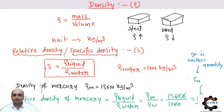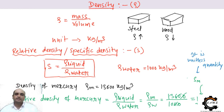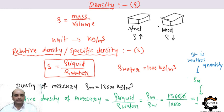The reason steel is denser than wood is the atomic arrangement. In steel, atoms are arranged in a very regular crystal lattice structure — a perfect arrangement. In wood, the atomic arrangement is not as ordered. That is why the density of steel is higher than the density of wood.